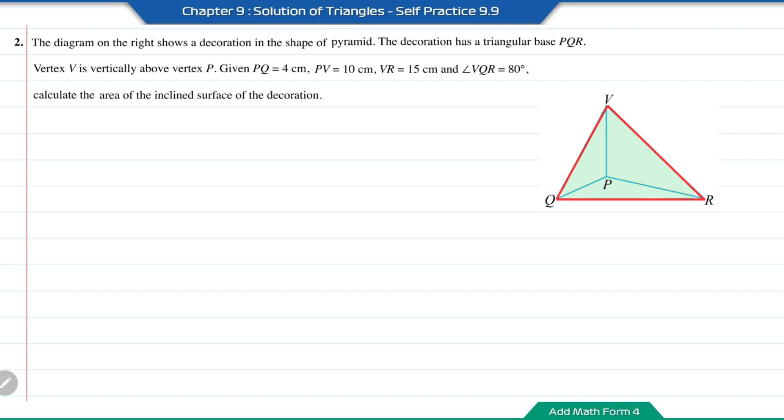The inclined surface of the decoration is actually the flat surface of triangle VQR. As vertex V is vertically above vertex P, this means angle VPR and angle VPQ both equal 90 degrees.